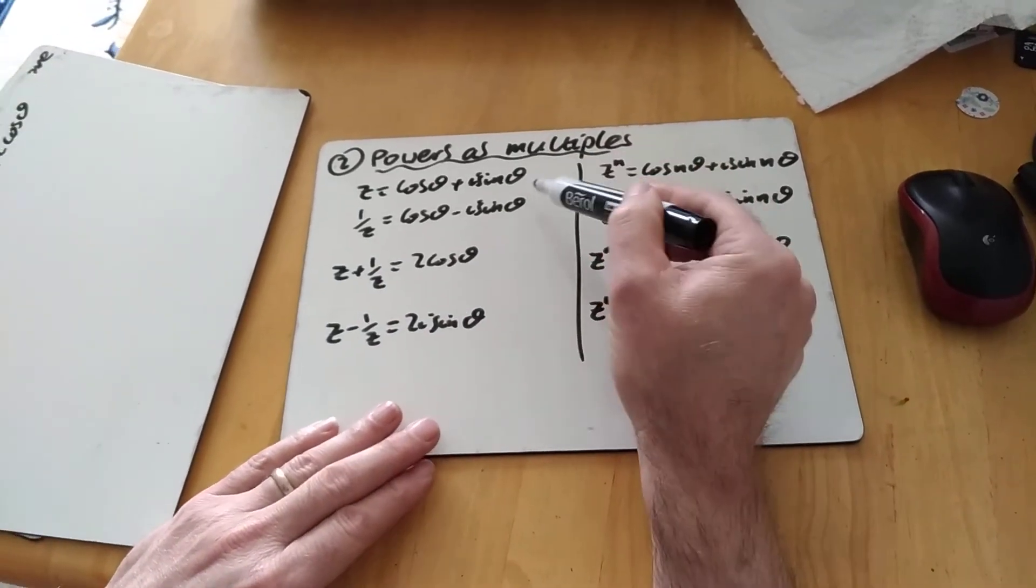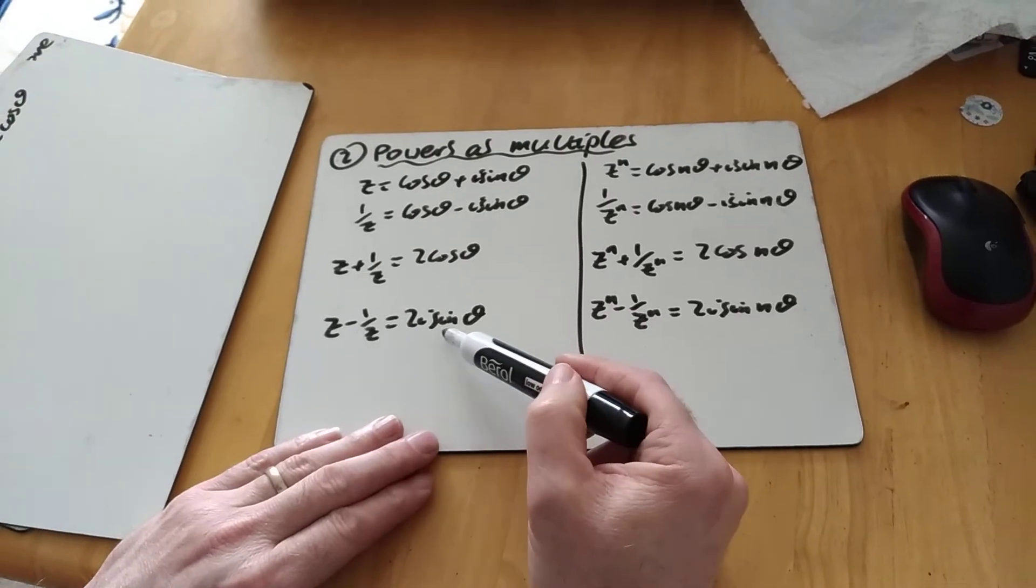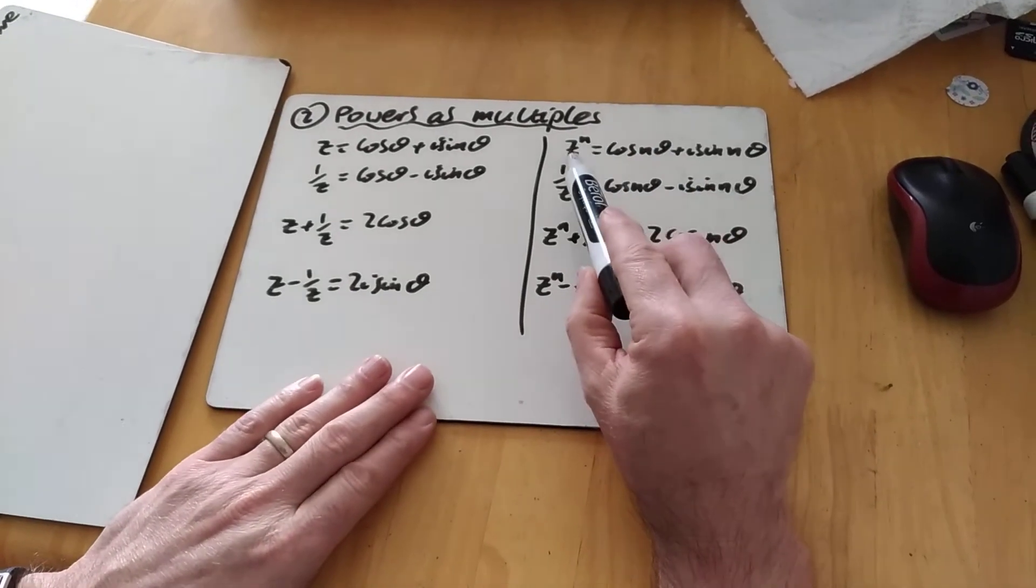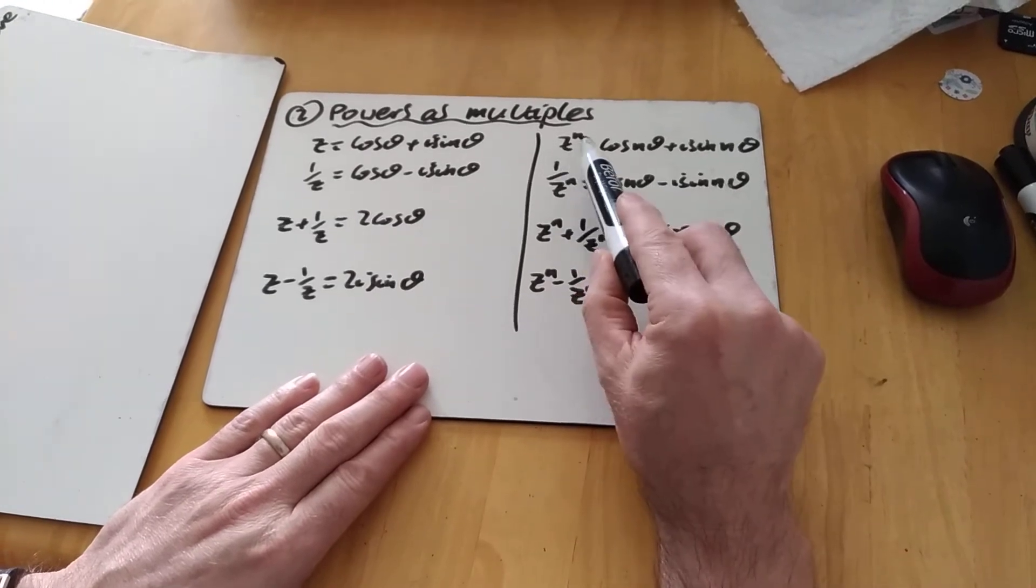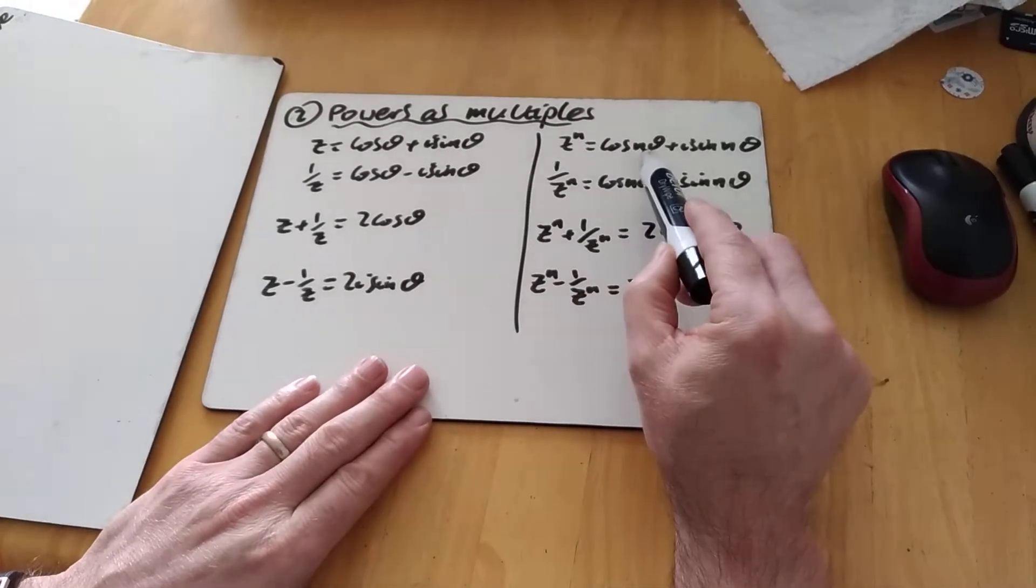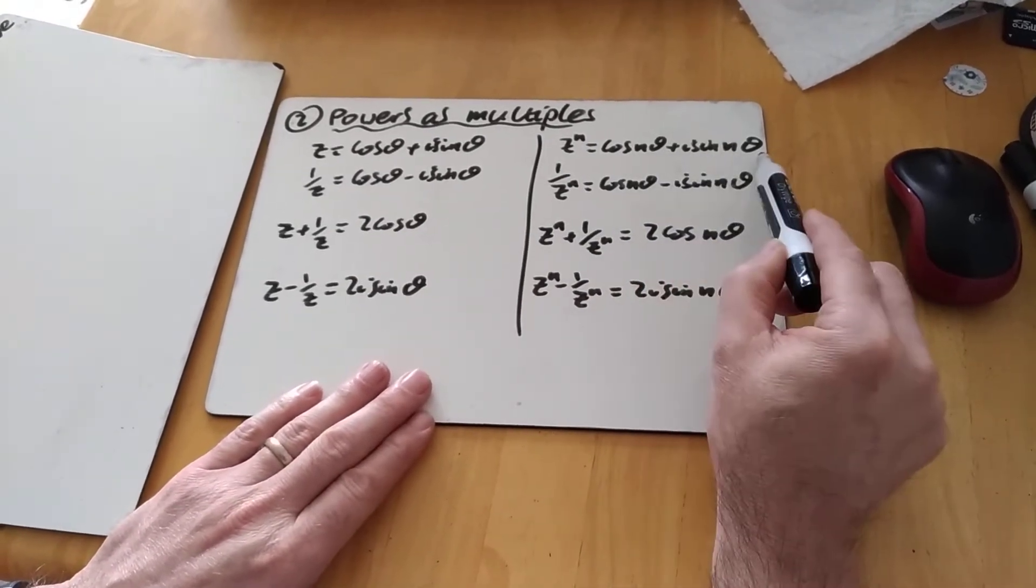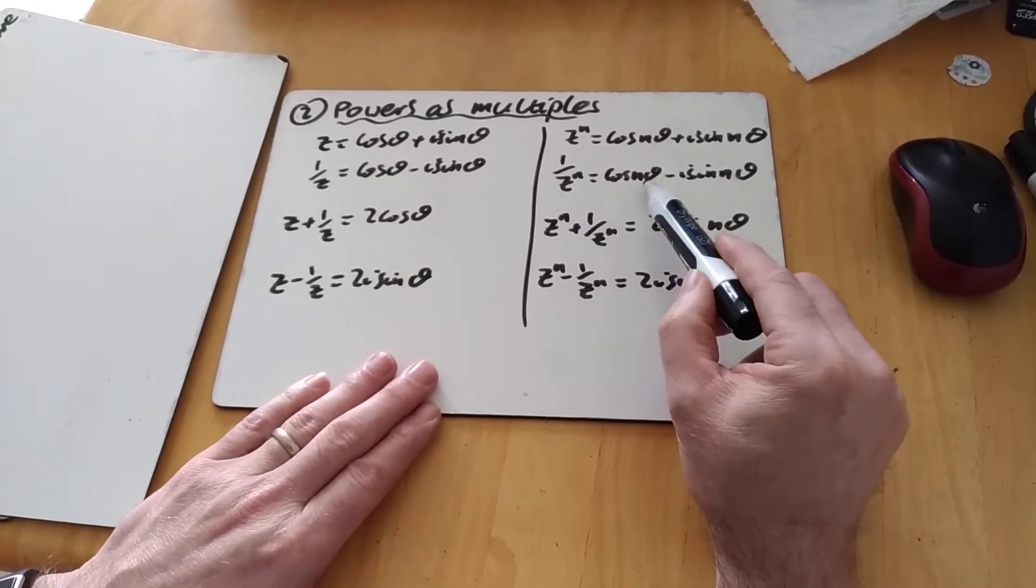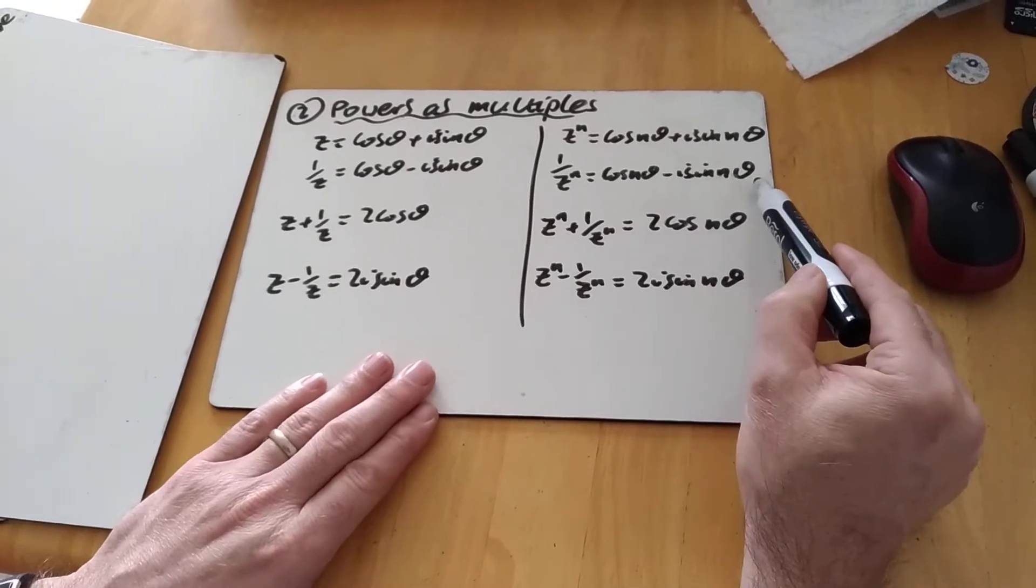Similarly, if we subtract the two equations, z minus 1 over z equals 2i sine theta. And the same thing applies with our De Moivre's expression as well. z to the power n we've seen is cos of n theta plus i sine n theta. And similarly, 1 over z to the n or z to the minus n is cos n theta minus i sine n theta.